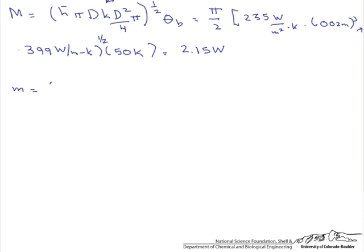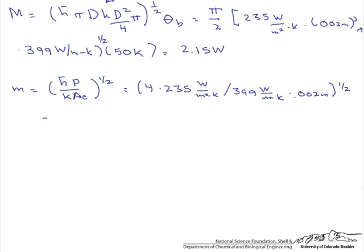The next thing we have to do is calculate little m. So that is H bar times P over K A sub C to the one half. And we do it exactly the way that we calculated our big M using the perimeter and using the cross sectional area. Actually here we can cross out some things from P over A sub C. So we are left with 4 times 235 watts per meter squared K divided by 399 watts per meter K times 0.002 meters, and this is to the one half. So our little m is 34.3 inverse meters.